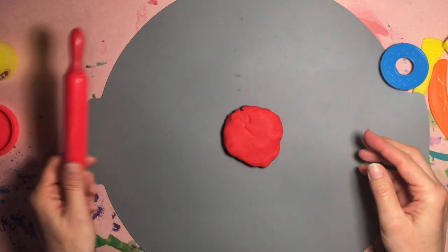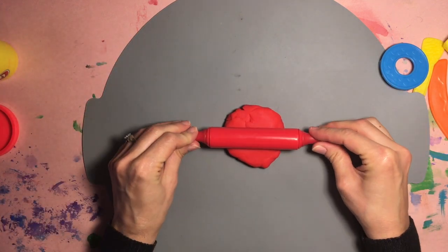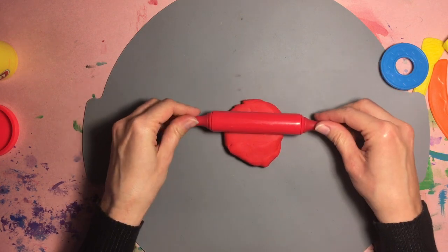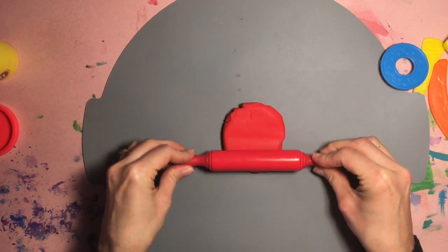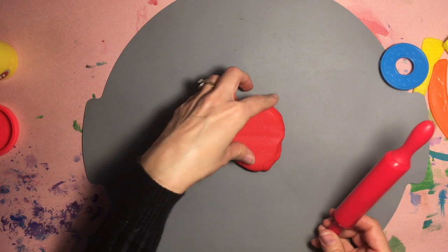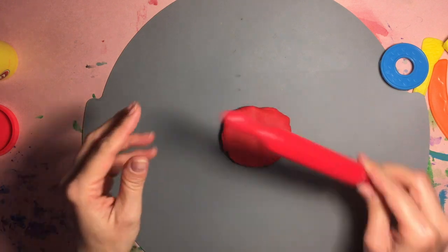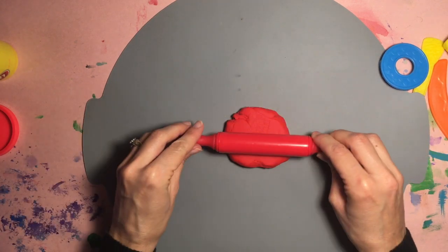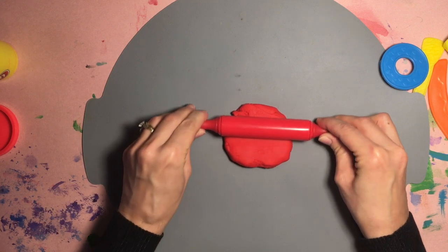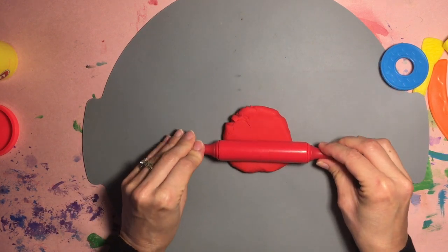When I start rolling my slab, I start in the middle and I roll forward and backward. And then I like to pick up my slab and turn it. Sometimes you can flip it over and start again in the middle and roll forward and backward.